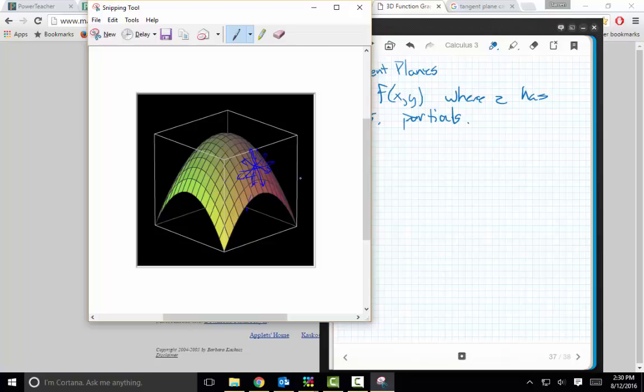So what may be bothering you is, wait a second, there's an uncountably infinite number of derivatives here. So if I've got an uncountably infinite number of derivatives, that means that the quote-unquote derivative in the classical Cartesian sense of the word, that's not even defined at that point. And therefore, it wouldn't be defined at any of these points. So how do I deal with that?